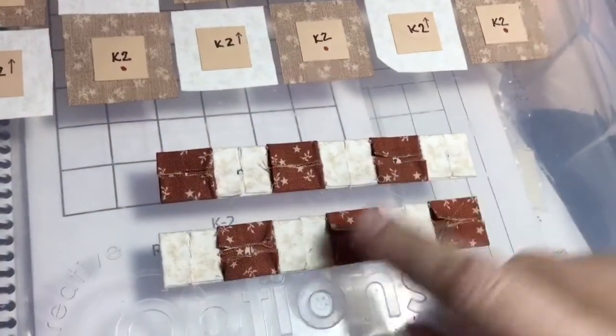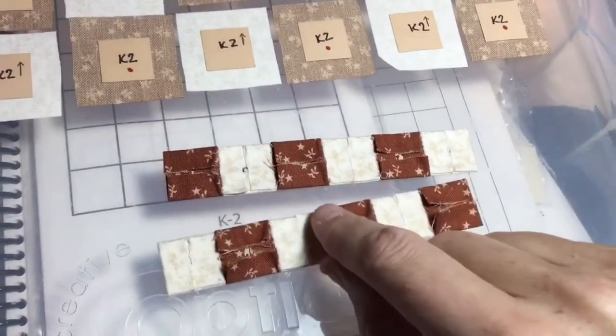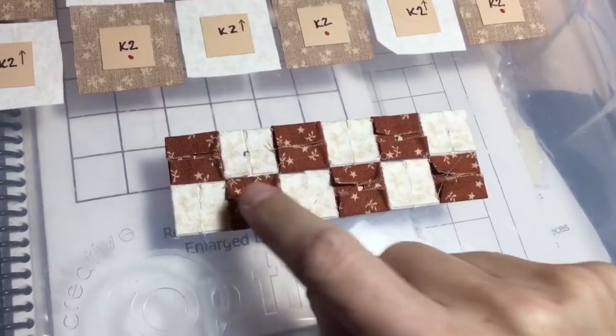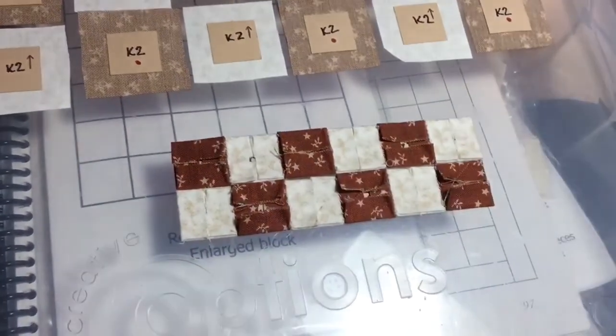I've got the second row done, just making sure that they are opposing colors, and then I will sew these together making sure that the intersections line up correctly.